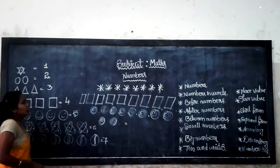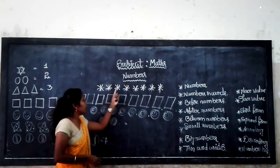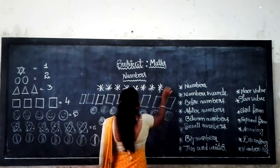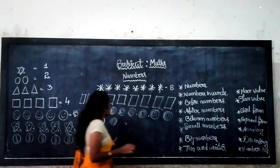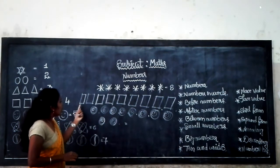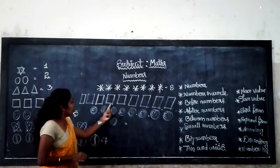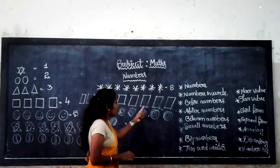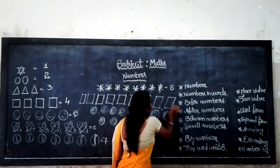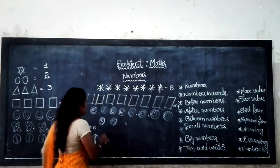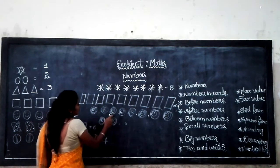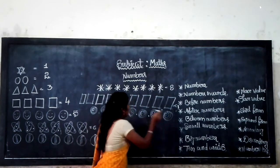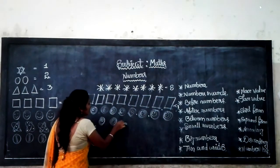Let's count these circles: 1, 2, 3, 4, 5, 6, 7. Come to the next one: 1, 2, 3, 4, 5, 6, 7, 8, 9, 10.